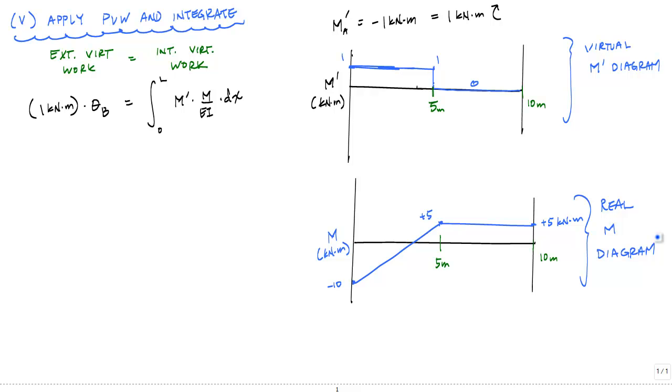So here are my virtual and my real moment diagrams. I'm going to use moment function for the virtual moment diagram. It's pretty easy. From zero to five meters, my moment function M₁'(x) is equal to just plus one kilonewton meters. And then M₂'(x) is equal to zero.